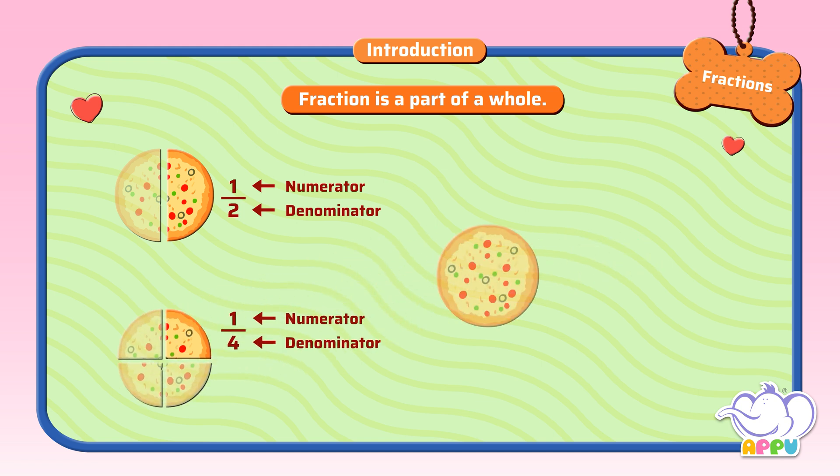If we cut a pizza into eight parts, then each slice can be written as a fraction, which is one by eight, which means one slice out of eight. Here the numerator is one, and the denominator is eight.